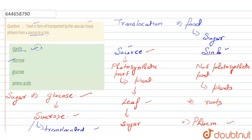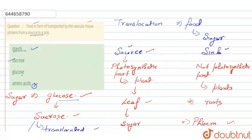Talking about the other options: starch is the storage food in plants. Glucose is formed but it is then converted into sucrose, which is then translocated. Amino acids are also not transported by the vascular tissue in the plant. So the right answer is option number two — sucrose.